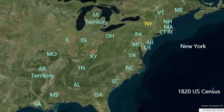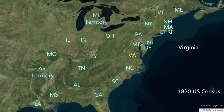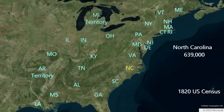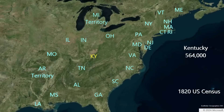New York was the most populous state in 1820 with 1.4 million people. Pennsylvania recorded just over 1 million residents. Virginia was the third largest state and the largest southern state, recording 938,000 souls. North Carolina was emerging as a robust southern state with 639,000 residents. Ohio, less than 20 years old in 1820, already had 581,000 citizens. Kentucky had 564,000 people. Massachusetts, 200 years after the arrival of the Mayflower in 1620, boasted 523,000 souls.